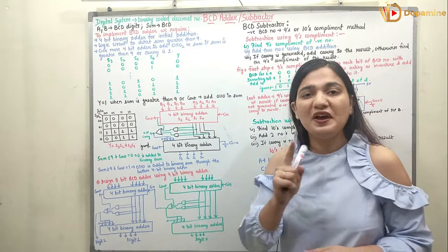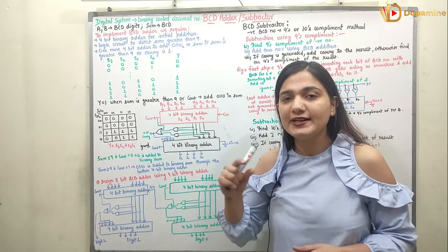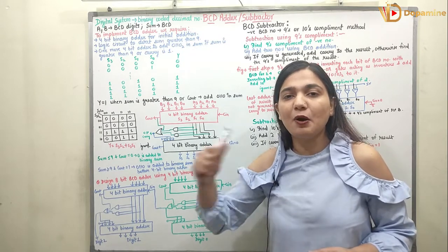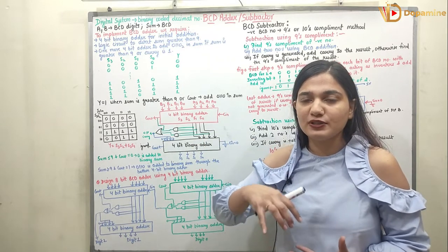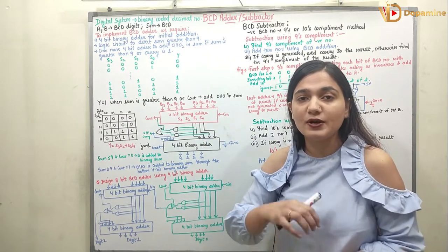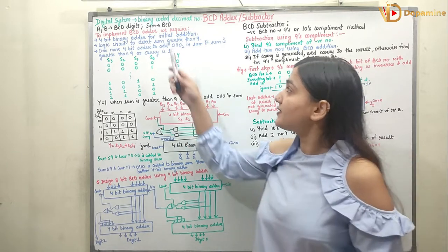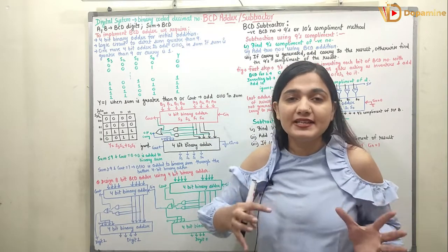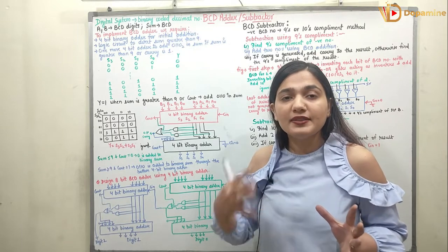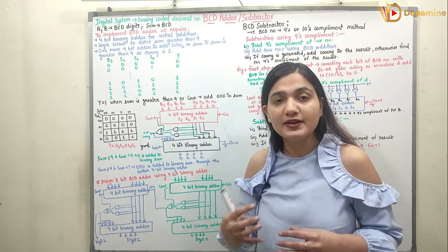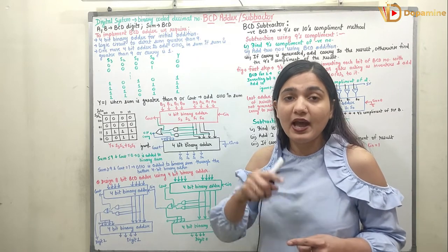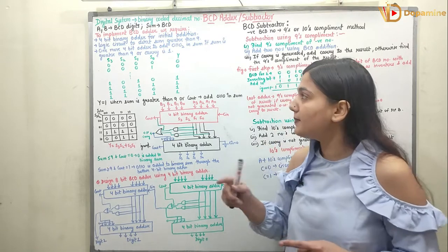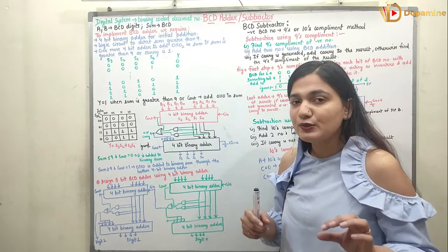What is BCD? We have already discussed the binary coded decimal number in a previous video. I hope you have seen it; if not, you can go back, recall that, and then come back. So here I am assuming you know what a BCD number is. BCD is a binary coded decimal number — in BCD, number representation goes up to 9 only. At 10 or any number greater than 9, we add 6.